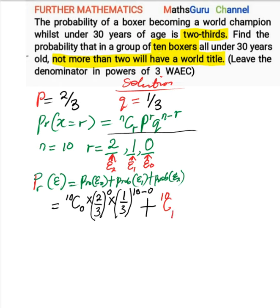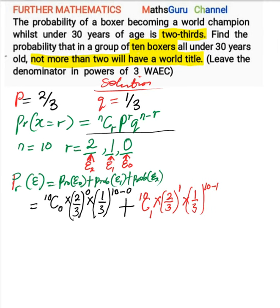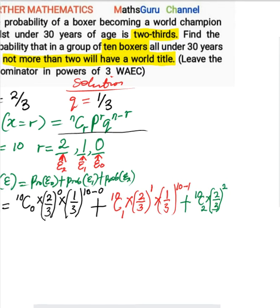Plus 10 combination 1, times (2/3) raised to the power of 1, times (1/3) raised to the power of 10 minus 1. Then plus 10 combination 2, times (2/3) raised to the power of 2, times (1/3) raised to the power of 10 minus 2.